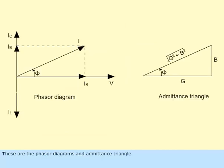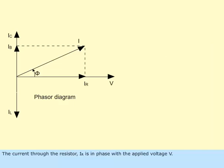These are the phasor diagrams and admittance triangle. The current through the resistor, I sub R, is in phase with the applied voltage, V.